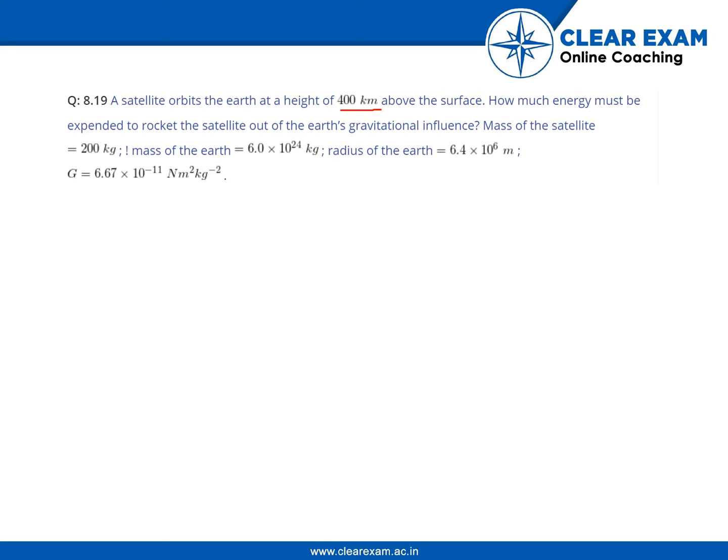You can consider the mass of the satellite as 200 kg, mass of the Earth as 6.0 × 10^24 kg, radius of Earth is 6.4 × 10^6 meters, and gravitational constant G is 6.67 × 10^-11 Newton meter square per kg square.